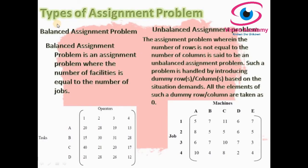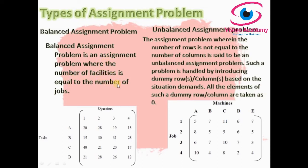We have two types of assignment problems: balanced assignment problem and unbalanced assignment problem — the same distinction seen in transportation problems. A balanced assignment problem is one where the number of facilities is equal to the number of jobs. So the number of facilities must equal the number of jobs.